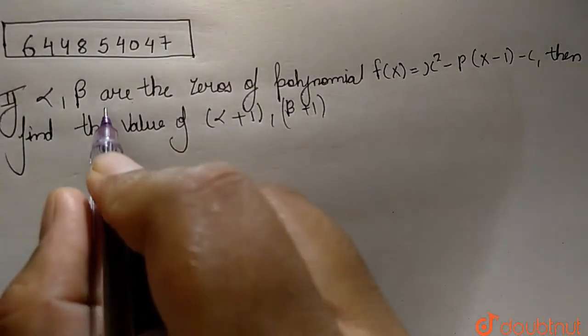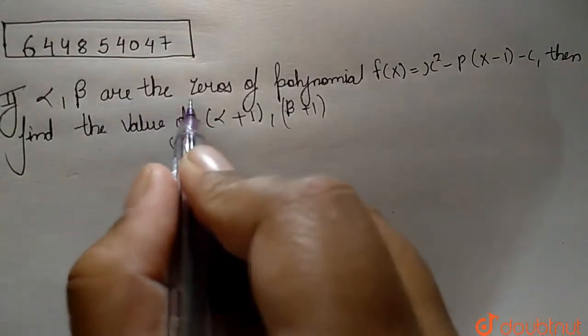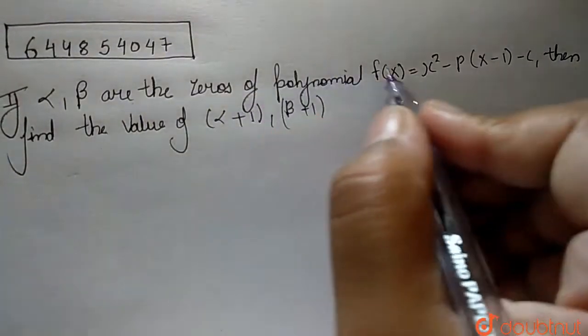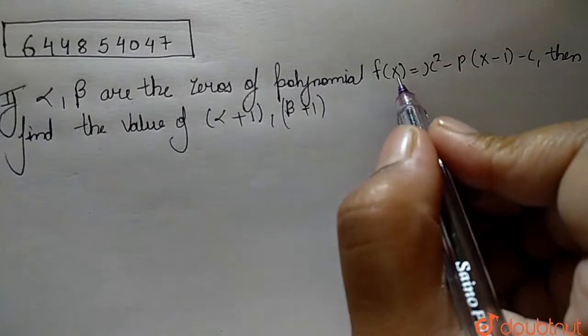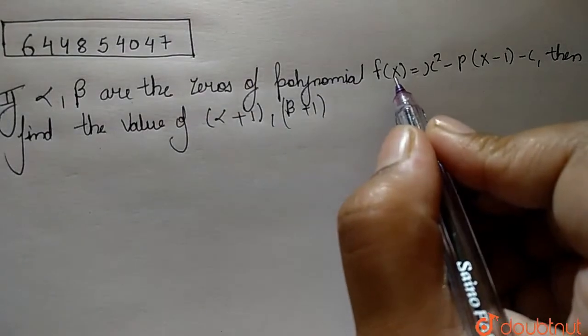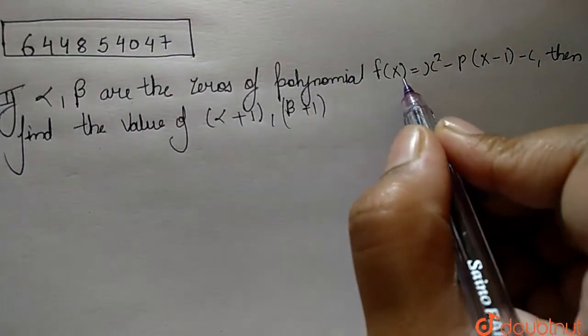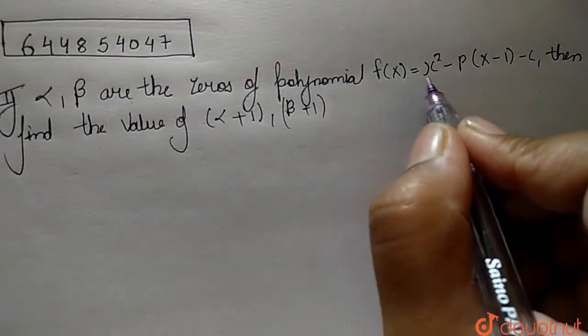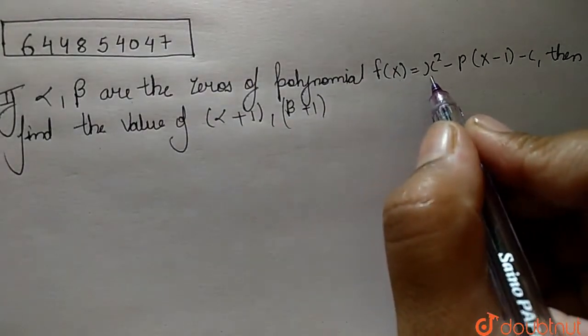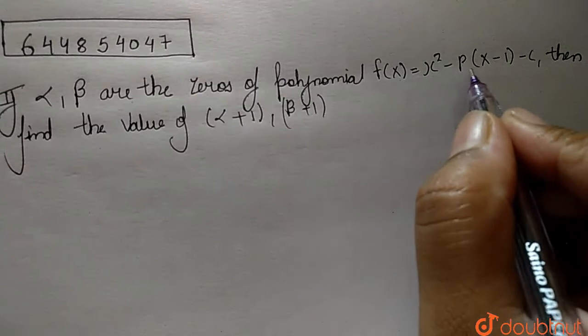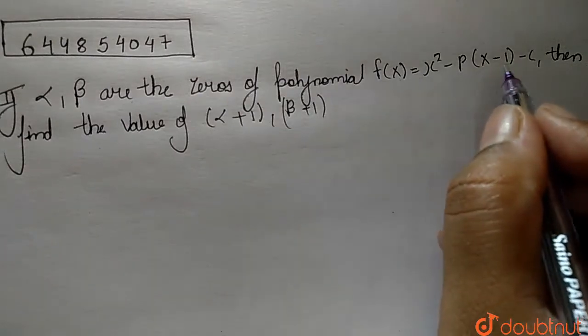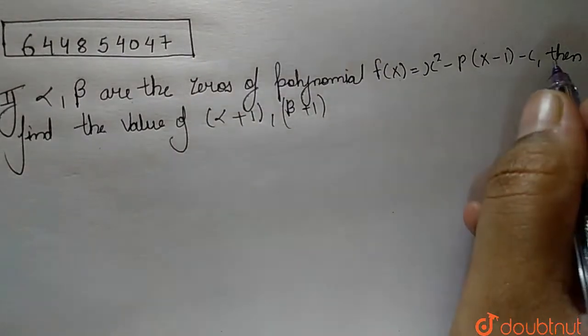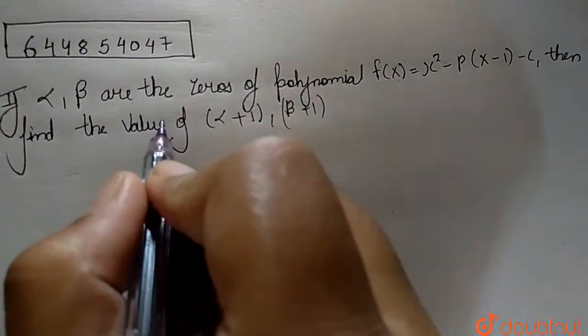The question here is: if alpha and beta are the zeros of the polynomial, where the polynomial is f(x) = x² - p(x) - (1 - c).